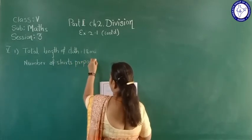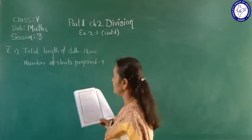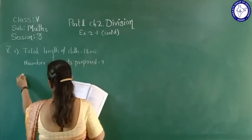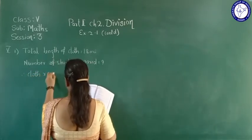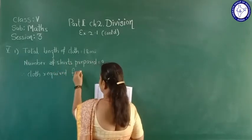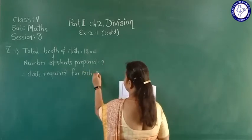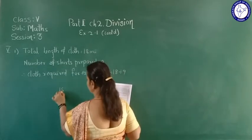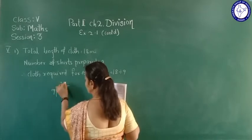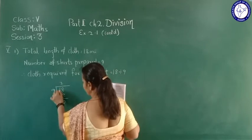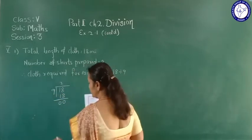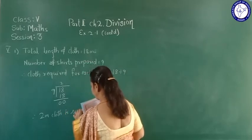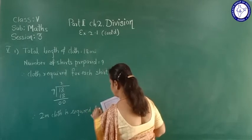For 9 shirts we need 18 meters. Then for each shirt, how much cloth is required, that we should find. Therefore, cloth required for each shirt equals 18 divided by 9. Here 9 twos are 18, so 8 minus 8 is 0, 1 minus 1 is 0. Therefore, 2 meters of cloth is required for each shirt.